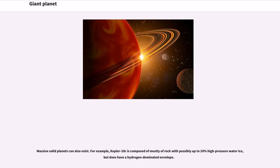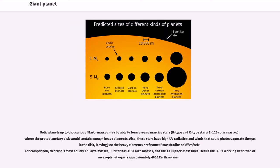Massive solid planets can also exist. For example, Kepler-10c is composed mostly of rock with possibly up to 20 percent high-pressure water ice, but does have a hydrogen-dominated envelope. Solid planets up to thousands of Earth masses may be able to form around massive stars, B-type and O-type stars (5 to 120 solar masses), where the protoplanetary disk would contain enough heavy elements.